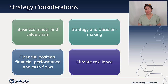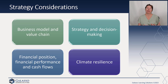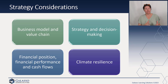What is the entity's strategy and decision-making, and what is the impact on financial position, financial performance, cash flows — the balance sheet, income statement, and cash flow statement — with respect to climate? And then climate resilience, which is the capacity of the entity to adjust to climate-related changes, developments, or uncertainties. Certain entities have more capacity for change than others because of the inputs to their process.